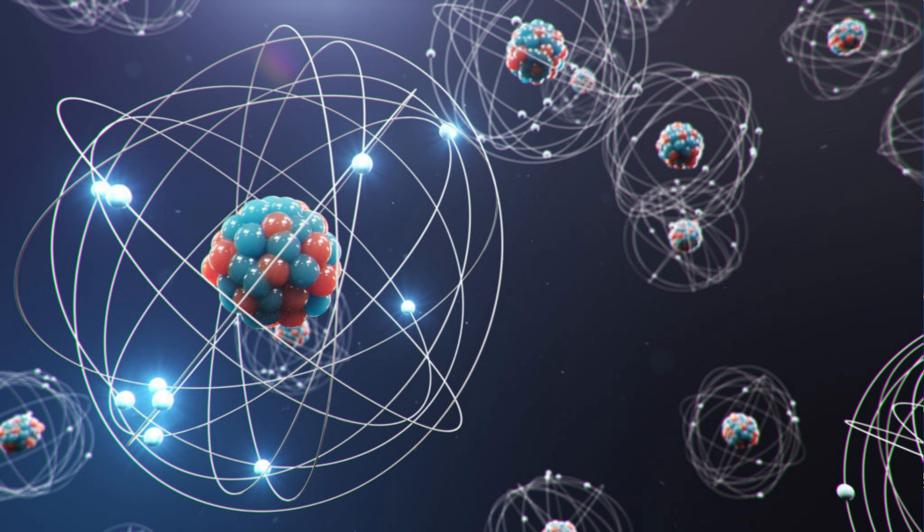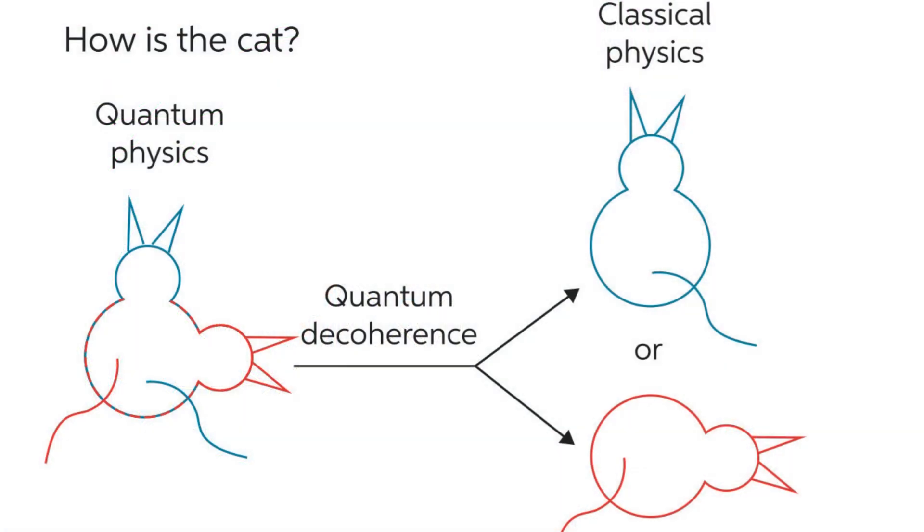One of the most intriguing principles of quantum physics is superposition. This concept allows particles to be in multiple states at once. The famous thought experiment, Schrodinger's cat, illustrates this idea where a cat could be simultaneously both dead and alive until it's observed.